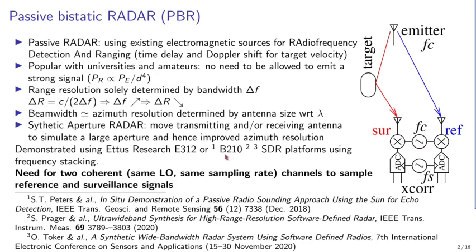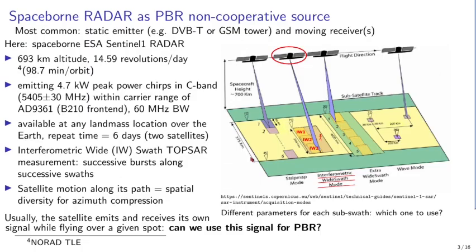You need a dual-channel receiver. Many sources have been applied to passive bi-static radar: analog television, digital television, FM broadcast, and GSM. Surprisingly, spaceborne radar has hardly ever been applied to this kind of endeavor, and this is the topic of this presentation.